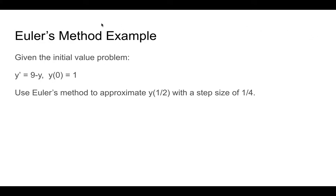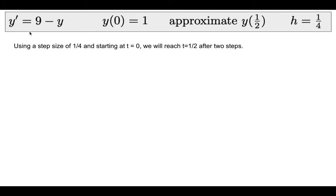For this example of Euler's method, we will be looking at the differential equation y' = 9 - y with the initial value y(0) = 1 — that is, when t = 0, y = 1. We want to use Euler's method to approximate y(1/2) using a step size of 1/4. The step size h = 1/4 is also sometimes called delta t, representing the change in t, or horizontal distance on a graph.